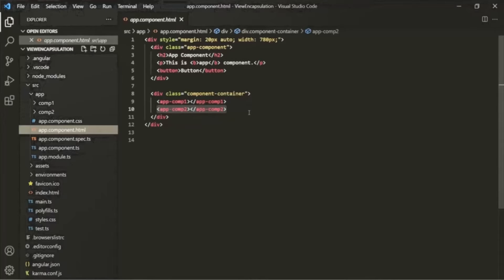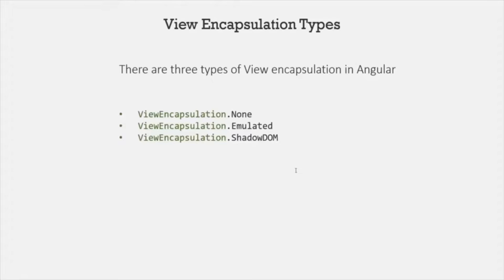How does Angular actually achieve this view encapsulation? In Angular, there are three types of view encapsulation: None, Emulated, and Shadow DOM. By default, Angular uses Emulated view encapsulation. In this emulated type, Angular adds some unique HTML attributes to the component CSS style and also to the HTML elements in order to achieve view encapsulation. For each component, there will be a unique attribute added to each HTML element. Let's understand this with an example.